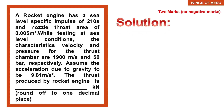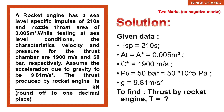Here is the given data. Specific impulse (Isp) = 210 seconds. Throat area (A* or A_t) = 0.005 square meters. Characteristic velocity (c*) = 1900 meters per second. Chamber pressure (P0) = 50 bar, which we convert to Pascal as 50 × 10⁵ Pa. Acceleration due to gravity (g) = 9.81 meters per second squared.